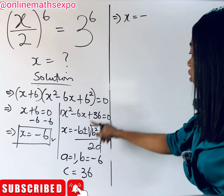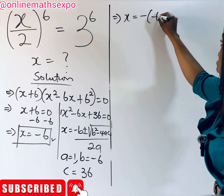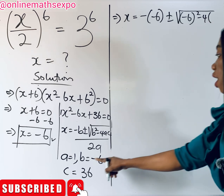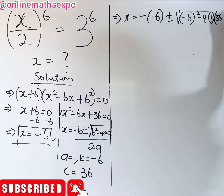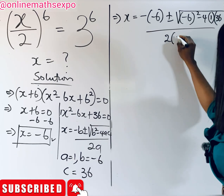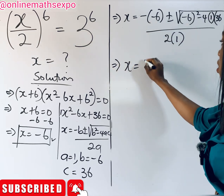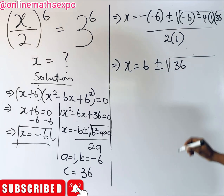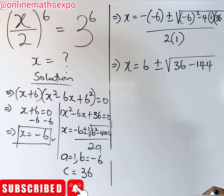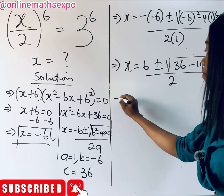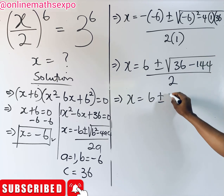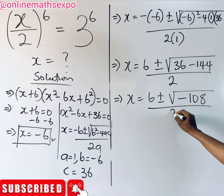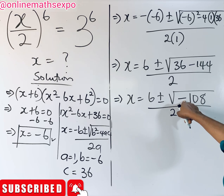Substituting: x = (−(−6) ± √((−6)² − 4 × 1 × 36)) / (2 × 1). Be careful to include b = −6 in brackets. This gives x = (6 ± √(36 − 144)) / 2, which simplifies to x = (6 ± √(−108)) / 2.